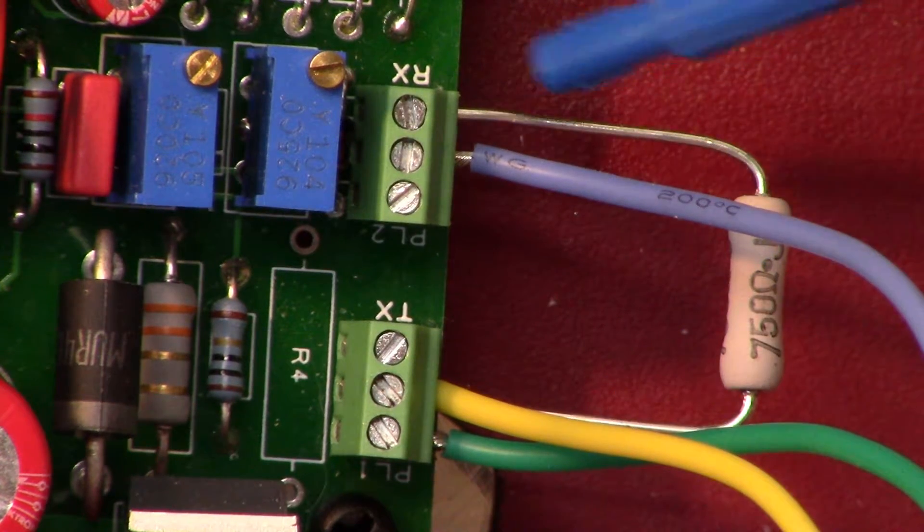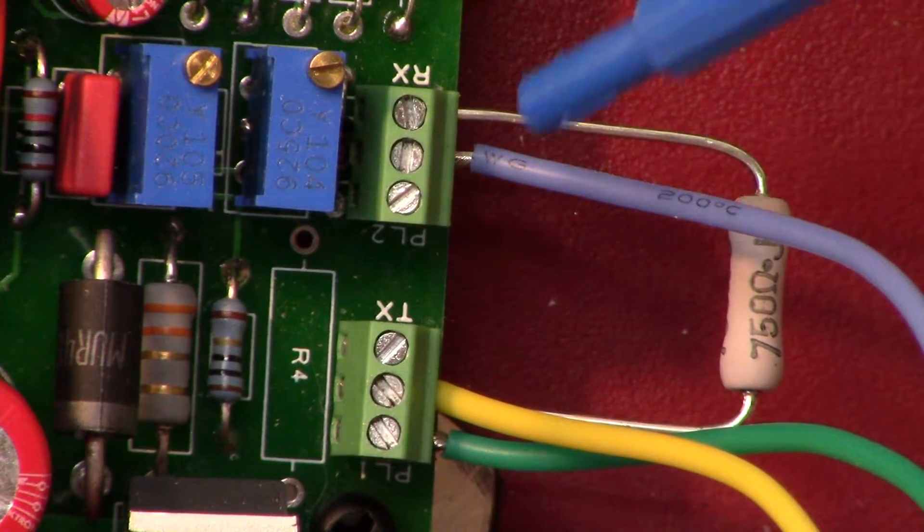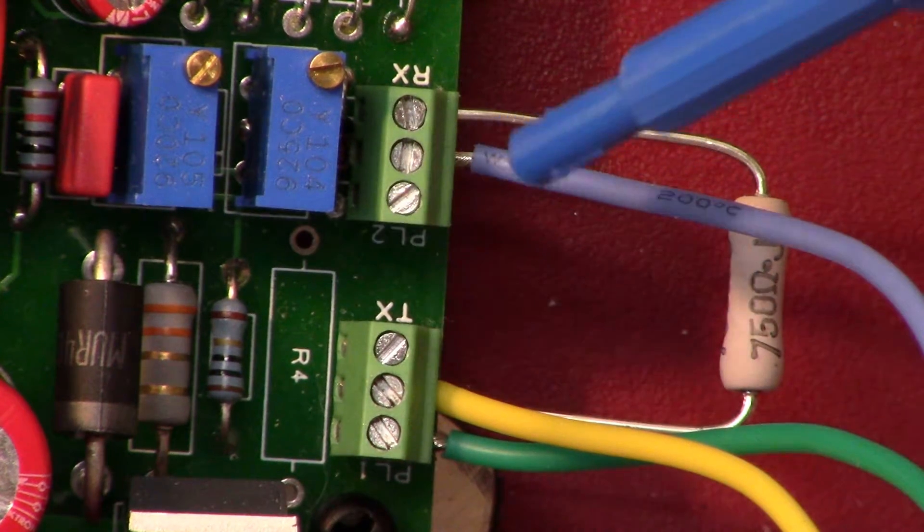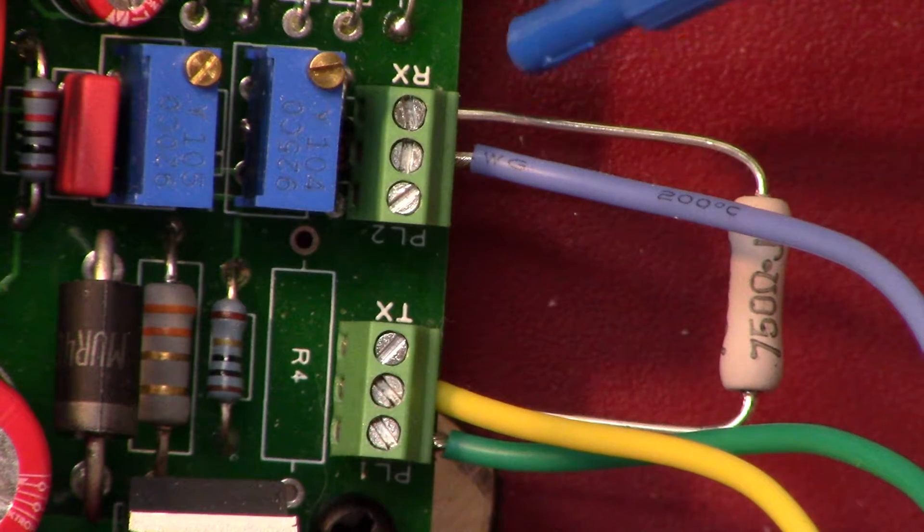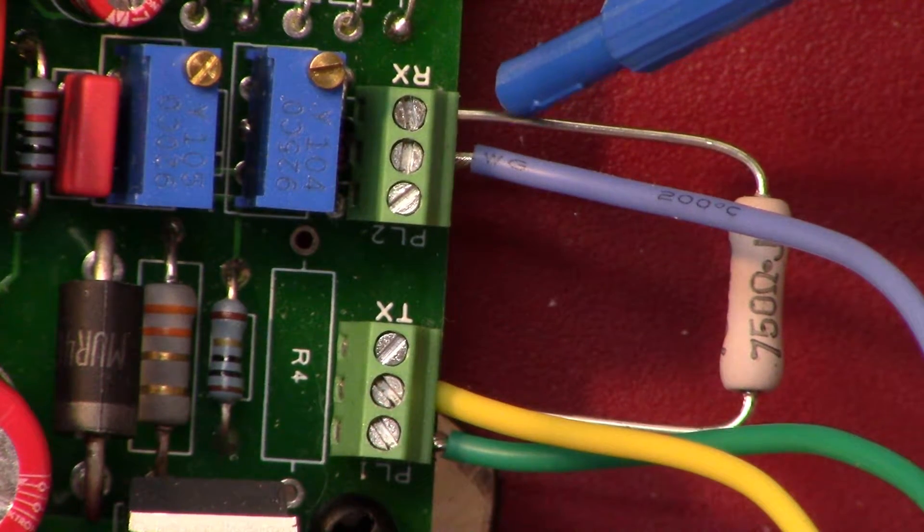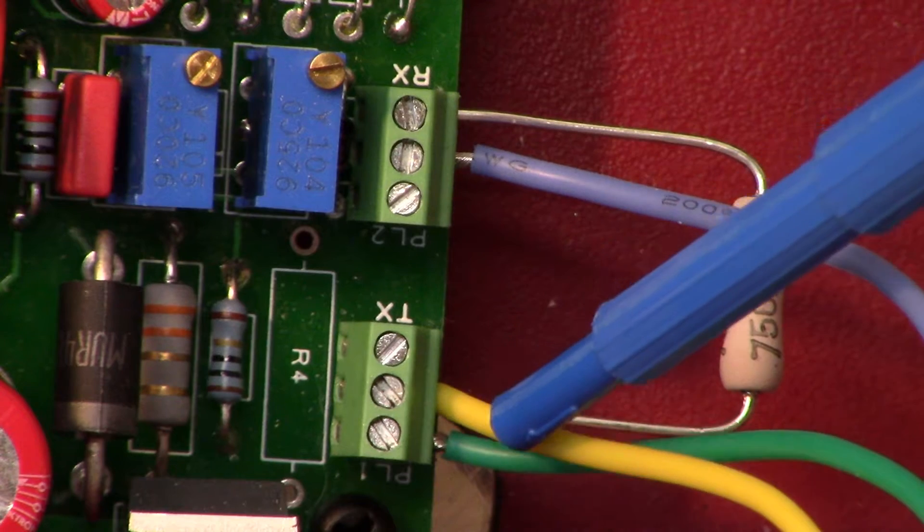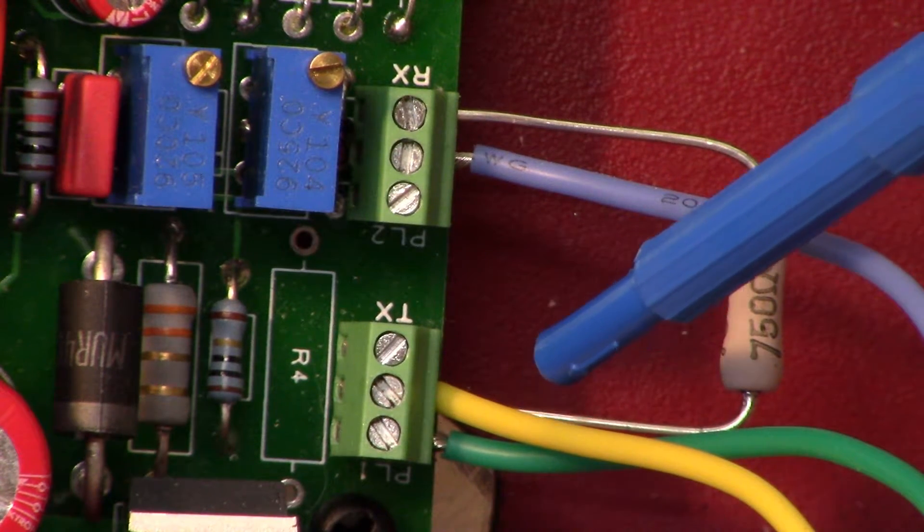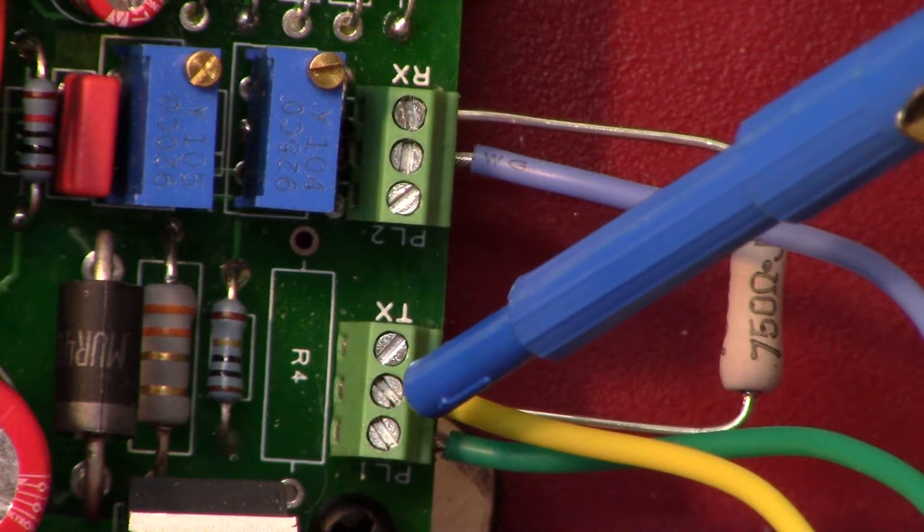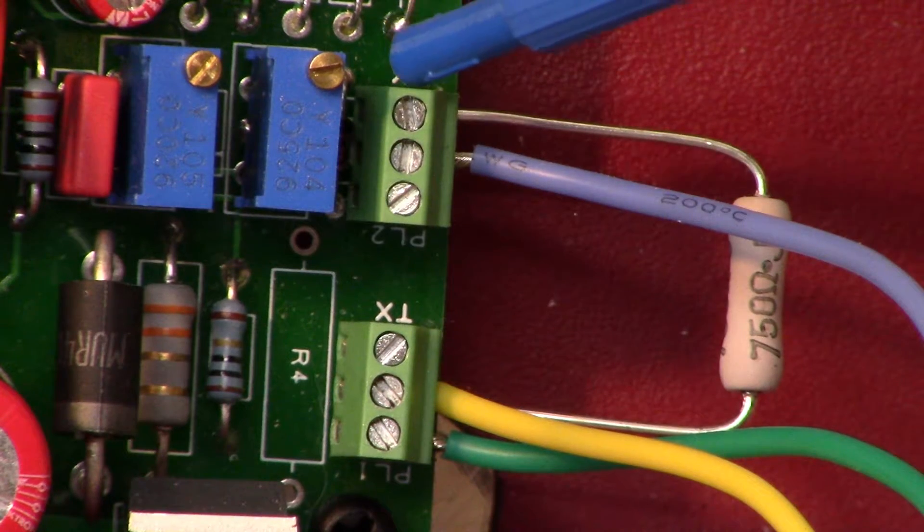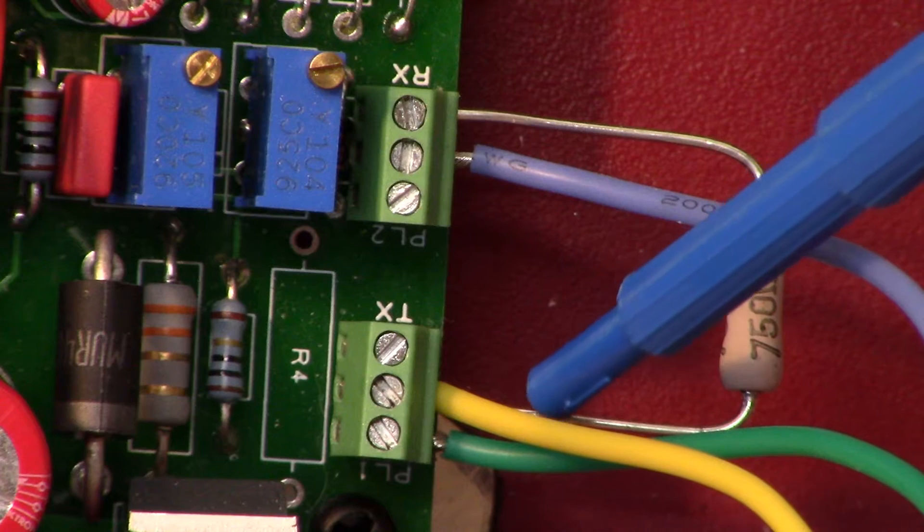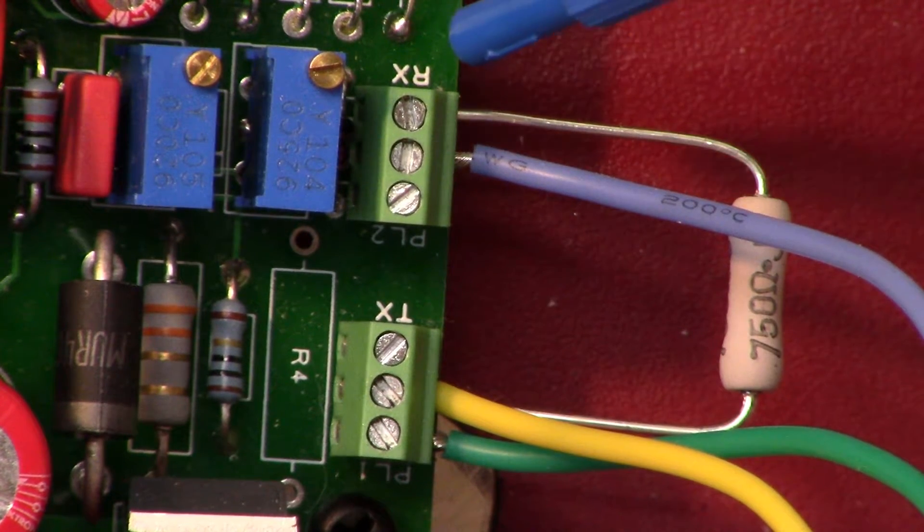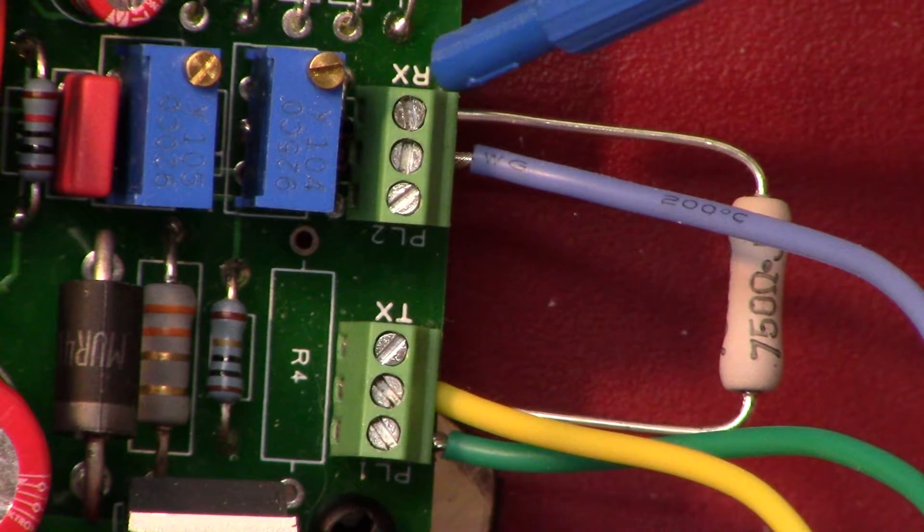This is my damping resistor. I opted not to solder it onto the board but I placed it across here. I went across terminal 2 and terminal 3, so terminal 2 on the transmit and terminal 3 on the receive. So that's my damping resistor.